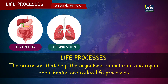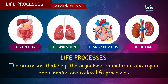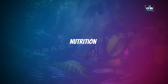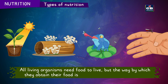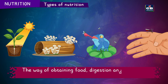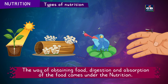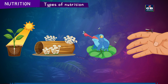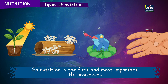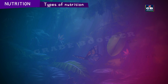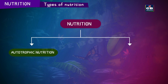Nutrition, respiration, transportation and excretion are the four important life processes that help organisms in their survival. Nutrition is the first and most important life process. The way of obtaining food, digestion and absorption of food comes under nutrition. There are two types of nutrition: autotrophic nutrition and heterotrophic nutrition.